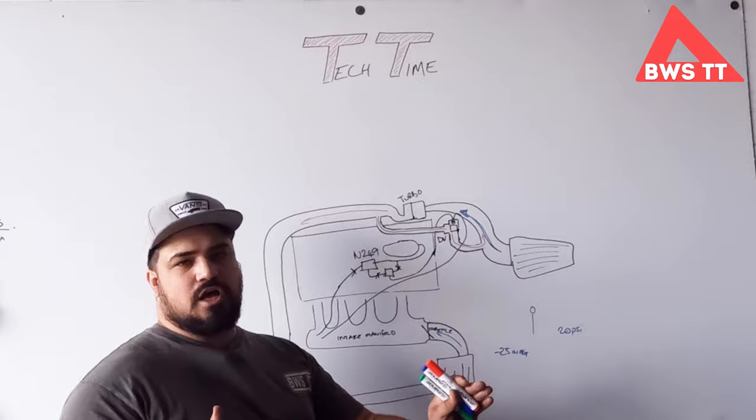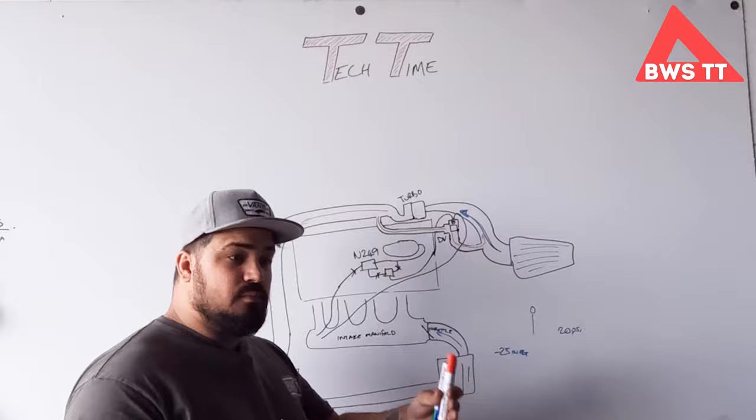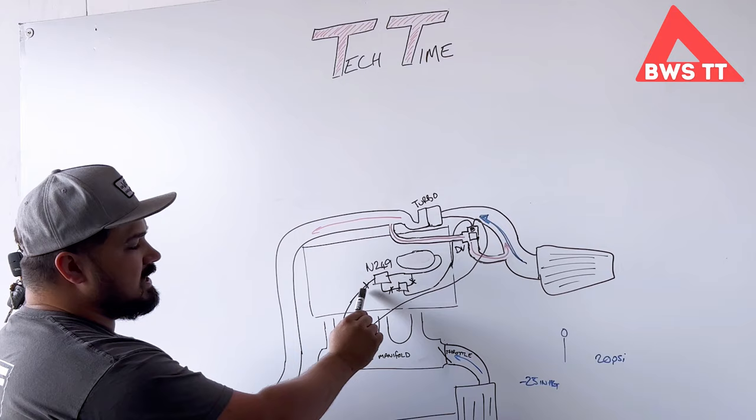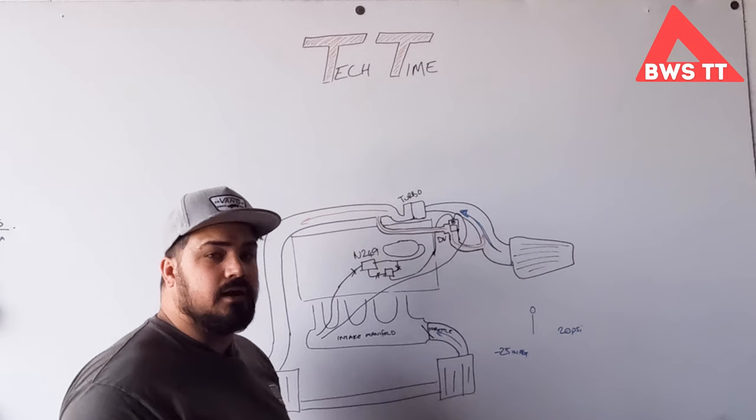Now if you've got a healthy N249 system and you remove it and bypass it and just put a fresh piece of line in, you're probably not going to feel a difference. The people that are feeling a difference have probably got cracks or splits in something to do with the N249, which is why the car now feels better.